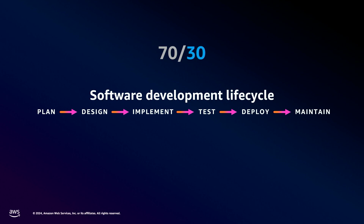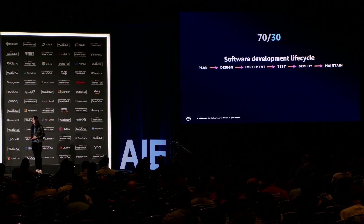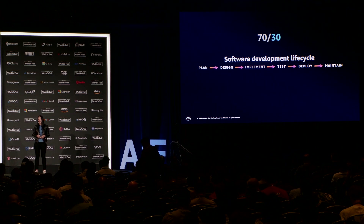Looking at the software development lifecycle, many of us can agree that the majority of time is usually spent not on writing valuable code, but on everything else — sometimes up to 70% on unvaluable tasks like writing boilerplate code, writing documentation, or maintaining old codebases. We only have maybe 30% of the time for the creative tasks that actually create joy in software development.